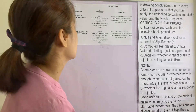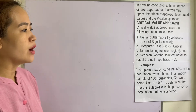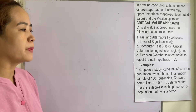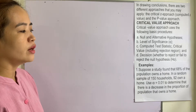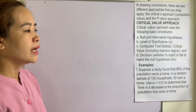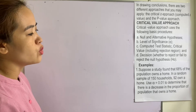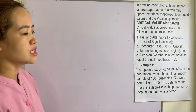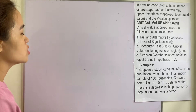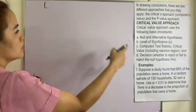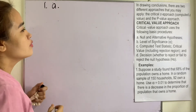Example number one: suppose a study found that 68% of the population owns a home. In a random sample of 150 households, 92 own a home. Use alpha 0.01 to determine if there is a decrease in the proportion of the population that owns a home. Let us follow the procedure.